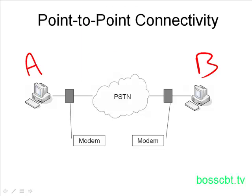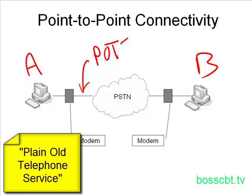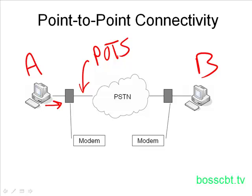We have two PCs, two modems, and each location has a phone line — a POTS line, which stands for plain old telephone service. It's just a landline that you would normally connect your telephone to. What happens quite simply is that PC A sends a digital signal to the modem, and it's the modem's job to convert that signal from digital to analog. Then it sends that analog signal into the PSTN. A POTS line is normally used for a telephone, and that's why a modem has to convert the digital signal into an analog signal — because the PSTN is expecting to receive an analog signal.